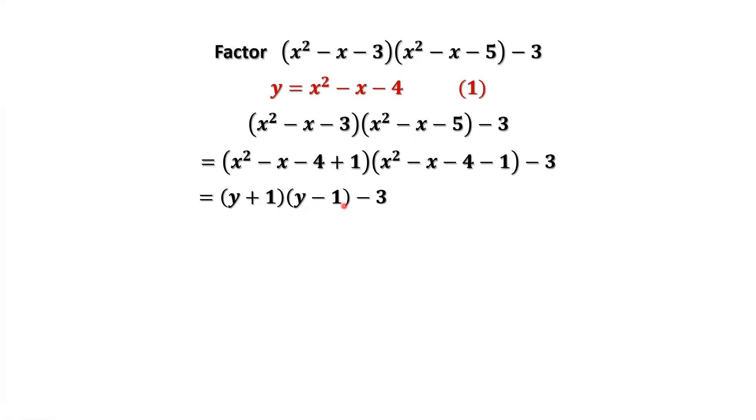Now we can use the basic algebra formula: a plus b times a minus b, which is a squared minus b squared. Therefore, this part equals y squared minus 1 squared, which is y squared minus 4.